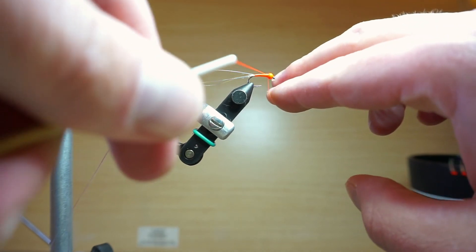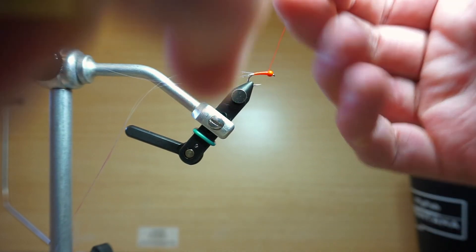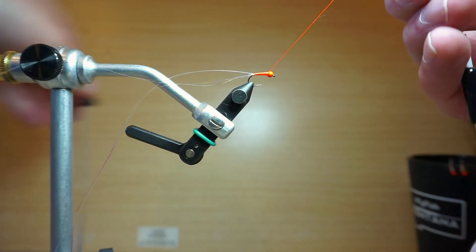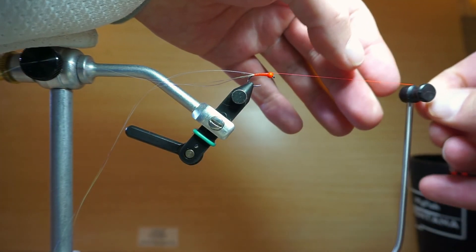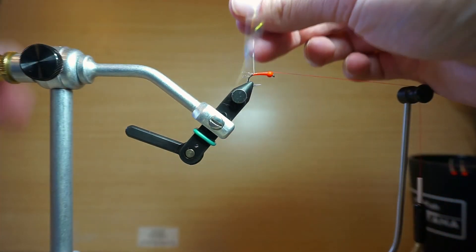If you don't have a vise with a bobbin holder or a rotary vise you can definitely do this step just by wrapping by hand. I just like using the rotary feature on my vise. I think I can be more exact with my wraps when I do that.